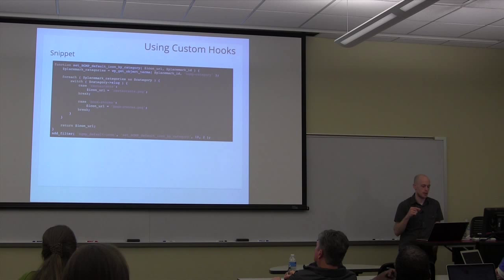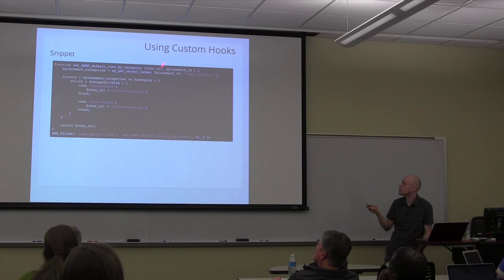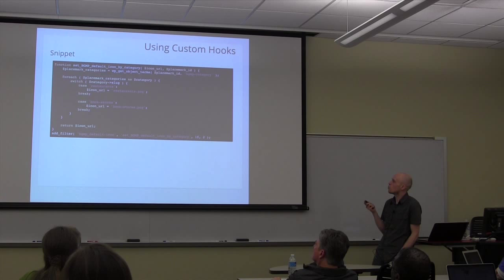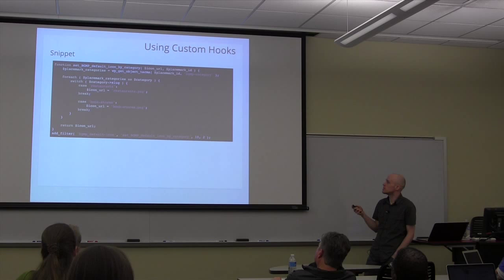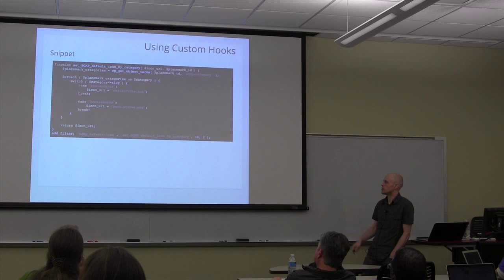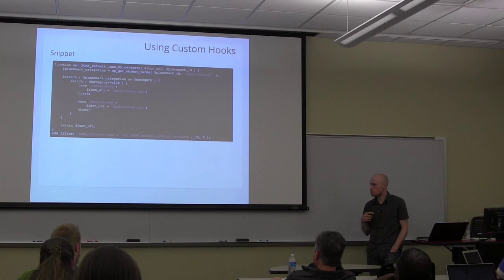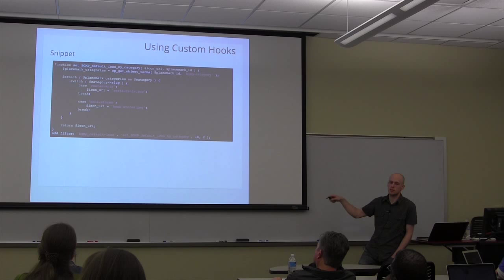Any plugin can register a callback, get that value passed in, and do anything it wants with it. You can also pass additional parameters like the placemark ID. This snippet looks up which categories are assigned to that post, loops through them, determines which icon to use based on the category, and returns the icon URL. So instead of manually going through each post, the site maintainer can just set up a little snippet like this and have it all done automatically — running in a functionality plugin that never touches the base plugin.